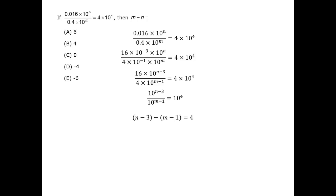In other words, n minus 3 minus the quantity (m minus 1) equals 4. We can carefully get rid of the parentheses and convert that into m plus 1. This now allows us to eliminate some of the numbers, combining minus 3 and plus 1, and then adding 2 to both sides. This gives us n minus m, and we are looking for m minus n.